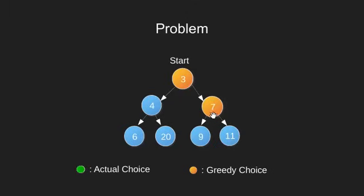Now once at 7, we have to choose between 9 and 11. A greedy choice would be to select the larger of the two. We select 11 and end up having a path with sum as 21.